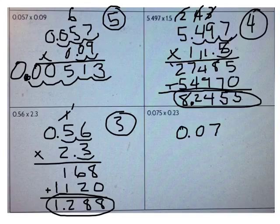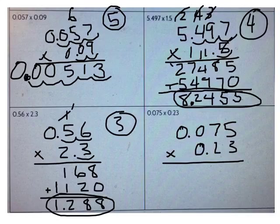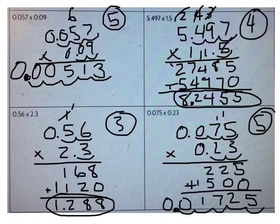Let's do one more problem. What's 75 thousandths times 2 and 3 tenths? Go ahead and solve that problem now. Check your work with mine.